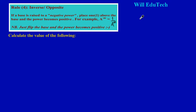Welcome back to WilledgyTech. In this video we'll be looking at Rule Number Four — the inverse rule. I tend to call it the opposite rule. It states: if a base is raised to a negative power, you should always place one above the base and the power becomes positive. For example, a base 'a' raised to a negative M equals 1 upon a to a positive M.